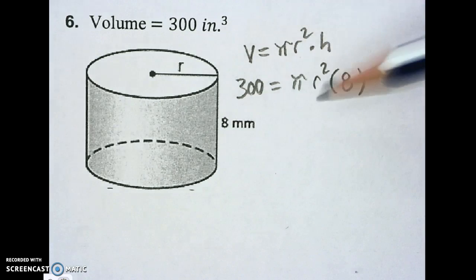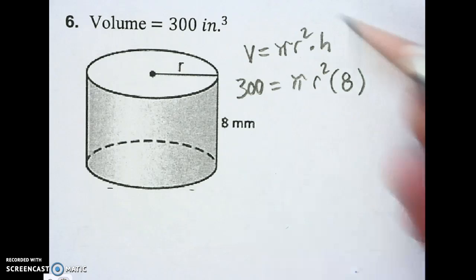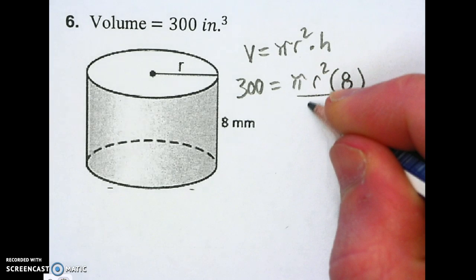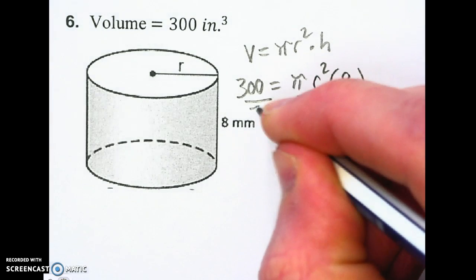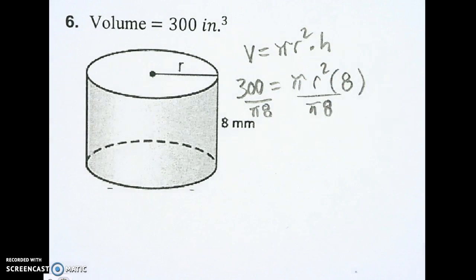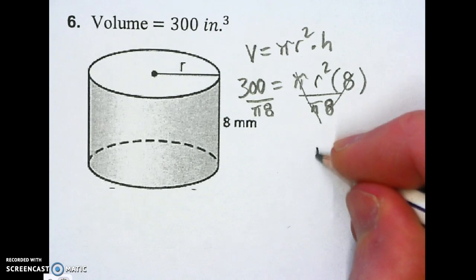All I need to do is divide off the side with r squared, pi and 8. So I'm going to do that now. Divide by pi and 8. Divide off the pi and 8 on the other side. Pies cancel and make a 1, and eights cancel and make a 1. I'm left with r squared.